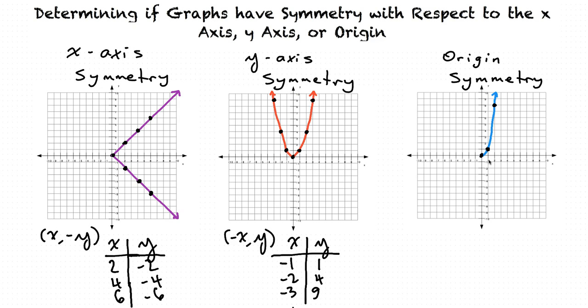Now we will discuss origin symmetry. In origin symmetry, both coordinates of every point can be written as opposites. Or in other words, if every point on the graph can be written negative x, negative y, then the graph has origin symmetry.